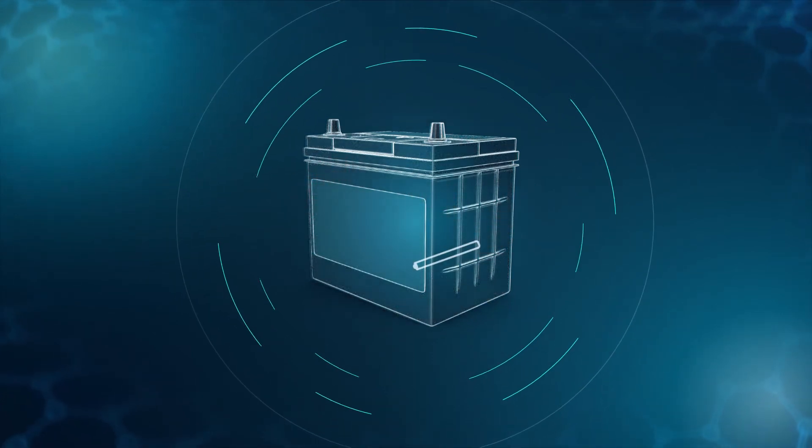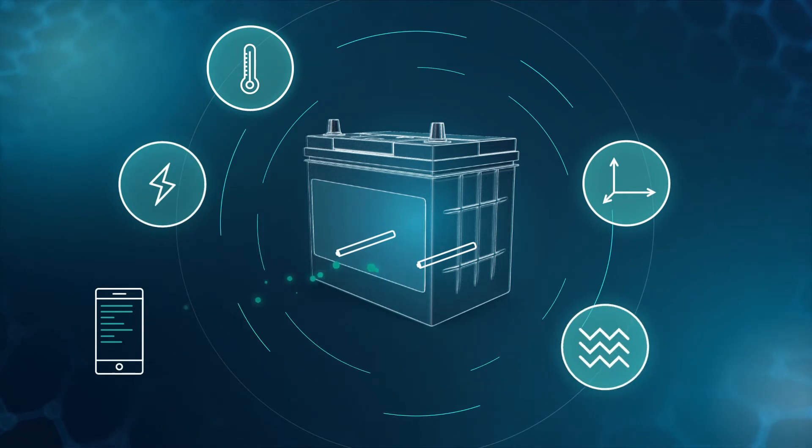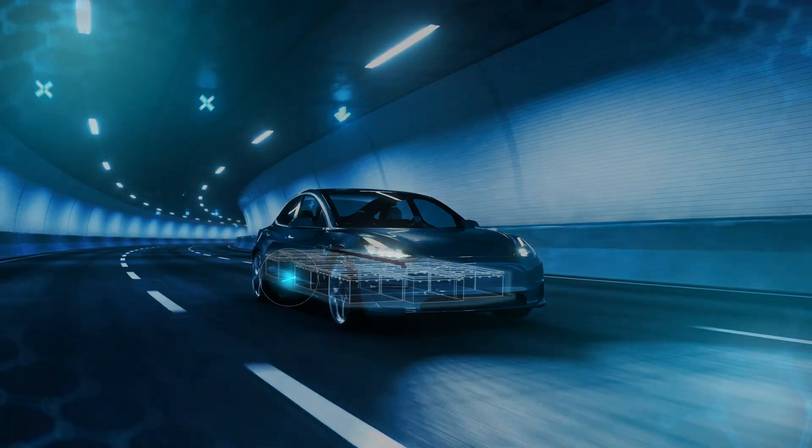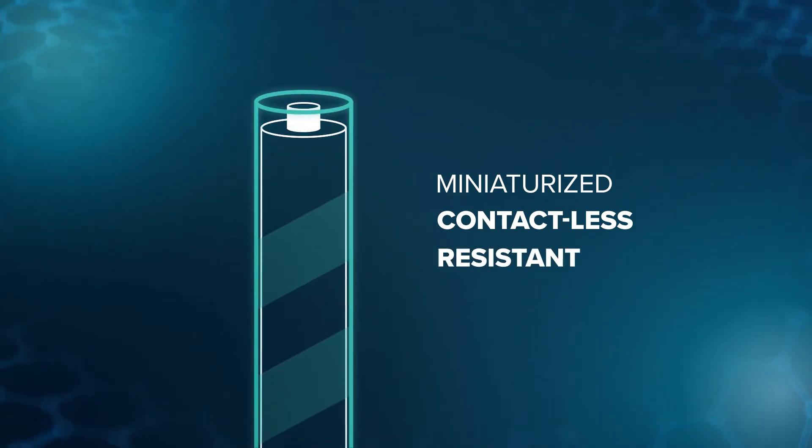These issues can be solved by collecting and actively using real-time intelligence about the internal processes of the battery as it is being used, to gain control over battery performance and service life. The Microwire is a miniaturized, contactless sensor resistant to harsh chemical environments.